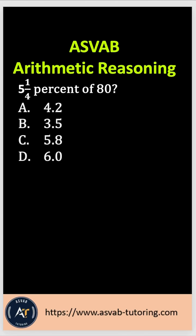Let's practice another very important basic arithmetic reasoning question on the ASVAB test. The question asks: 5 and 1/4% of 80.